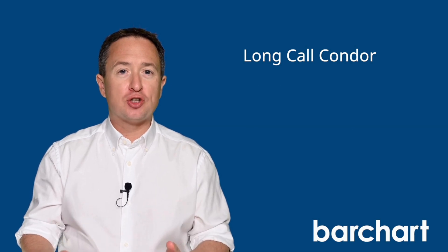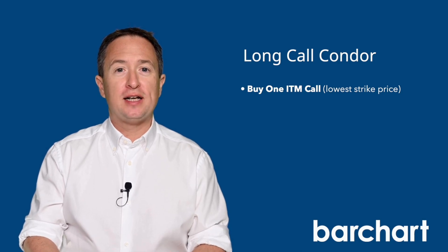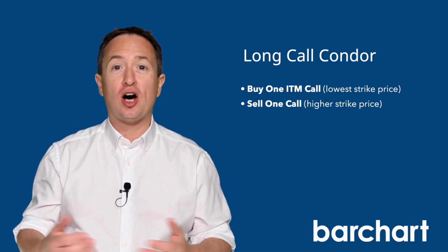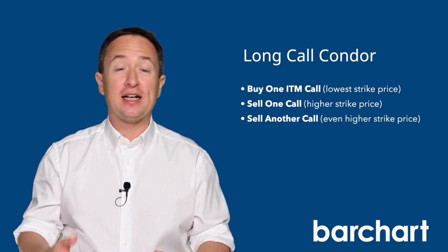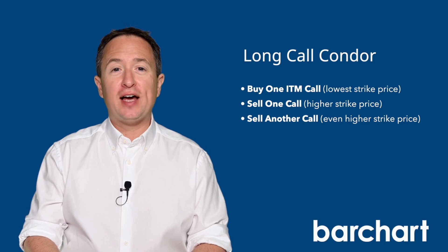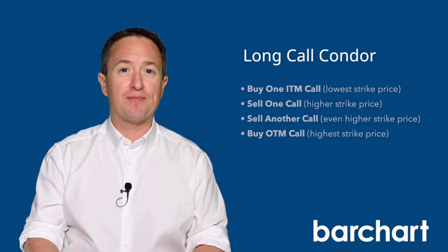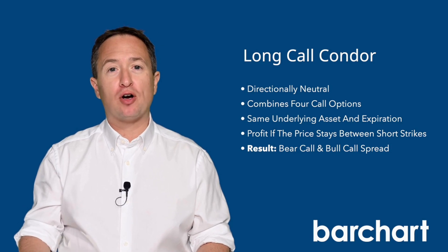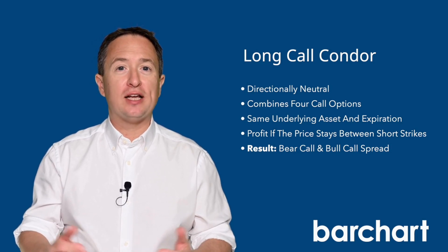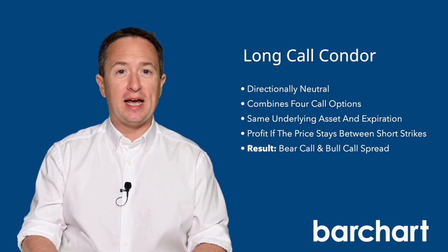To set up the trade, you'll start by buying an in-the-money call at one strike price, then sell another call at a higher strike price, sell another at an even higher strike, and finally buy a call at the highest strike. The result is a bull call and bear call spread that creates a long call condor, which results in a net debit.